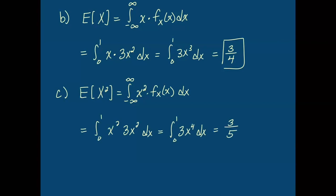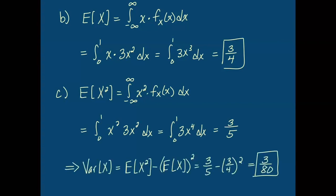To finish off this variance problem, we put it all together. The variance of X is E[X²] - (E[X])², which gives us 3/80.